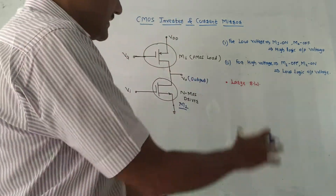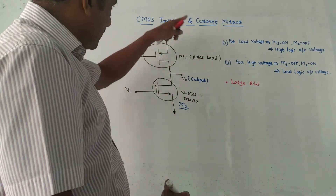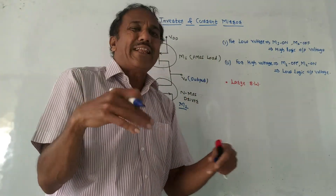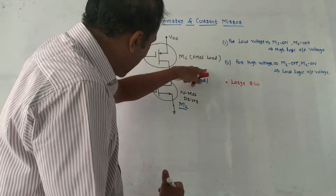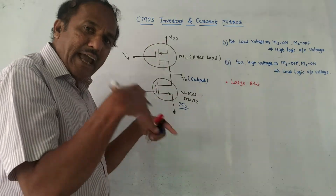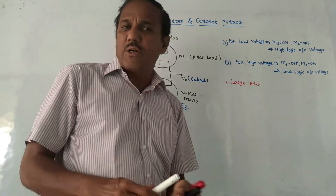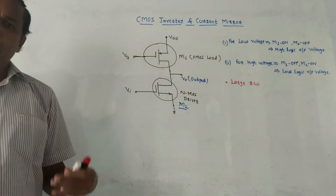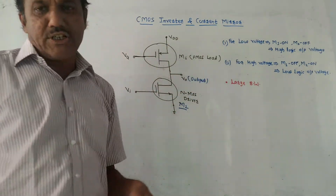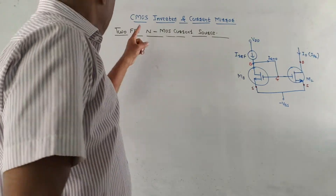That is why it is called an inverter. The major advantage of this type of connection — also called a CMOS inverter with active load — is that the PMOS connected to NMOS acts as an active load. This active load provides larger bandwidth, so whenever the application requires larger bandwidth, this type of connection is used.